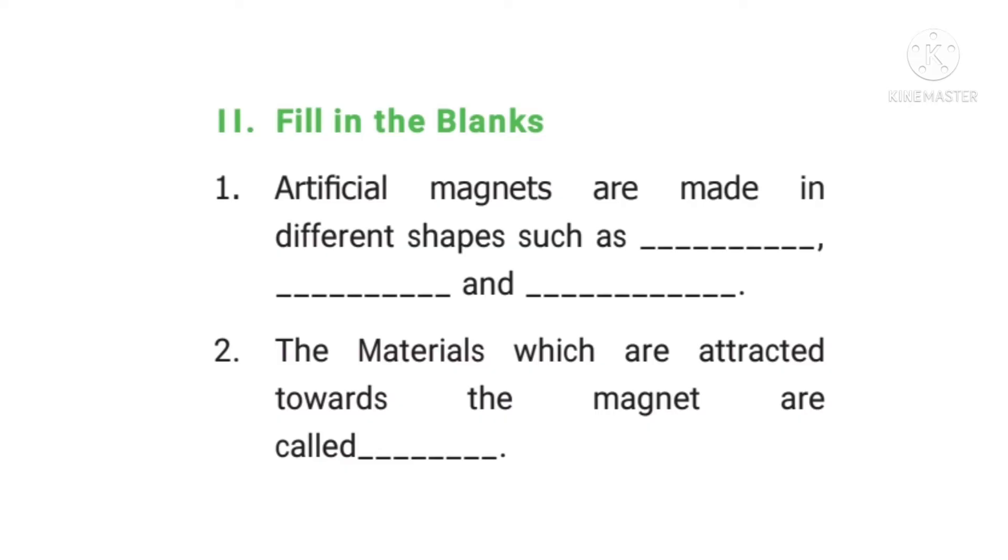Question 1: Artificial magnets are made in different shapes such as dash, dash and dash. Answer: Oval, cylindrical and disk shape.